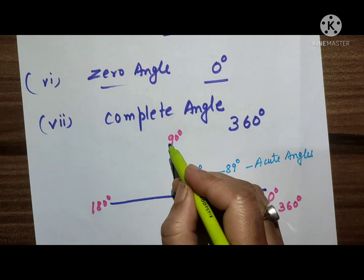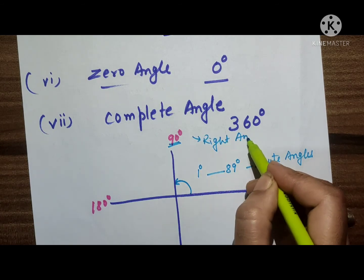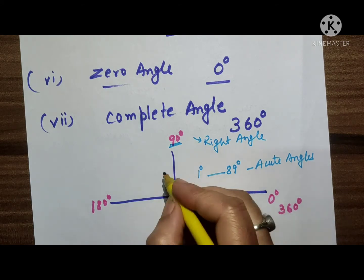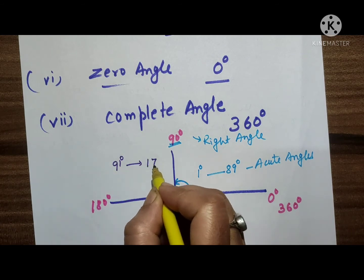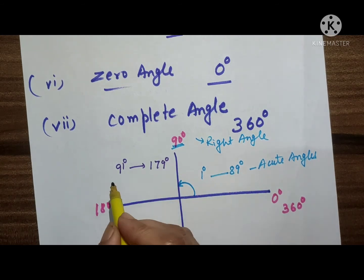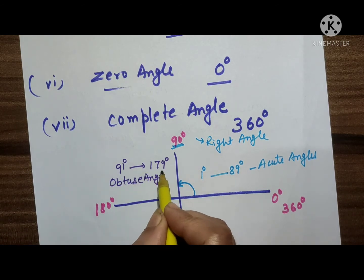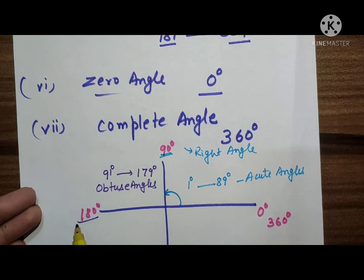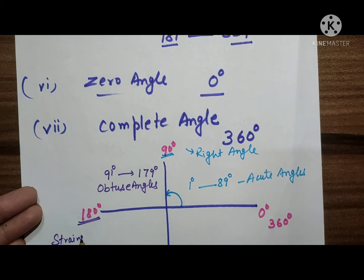90 degrees is called a right angle. Next, angles from 91 degrees to 179 degrees are called obtuse angles. And 180 degrees is called a straight angle.